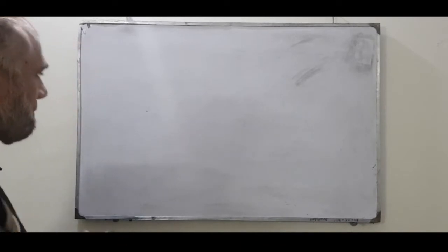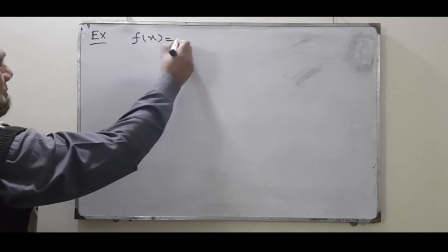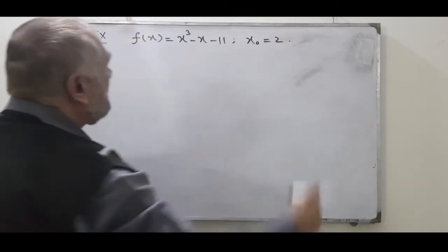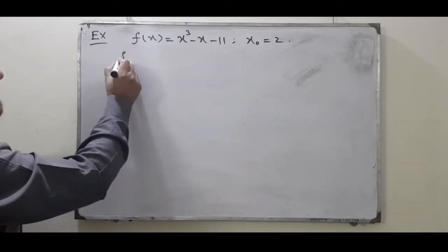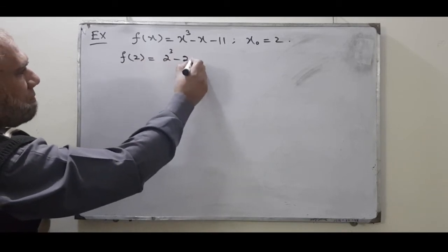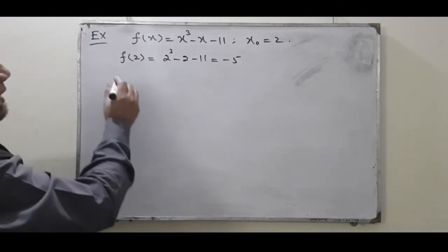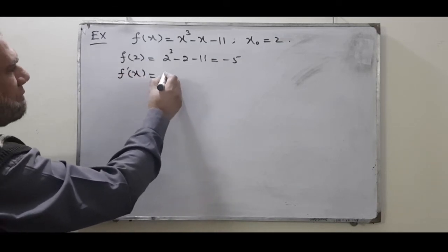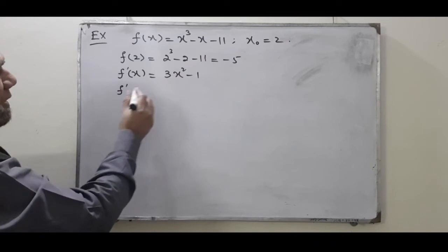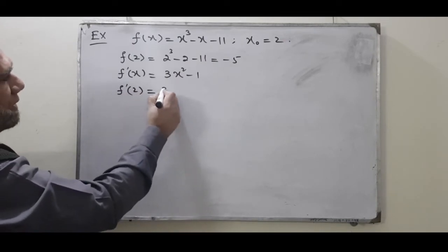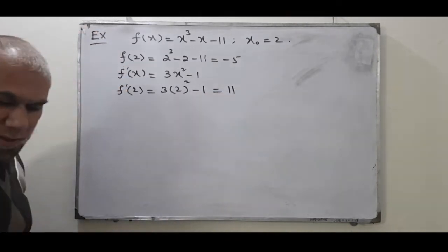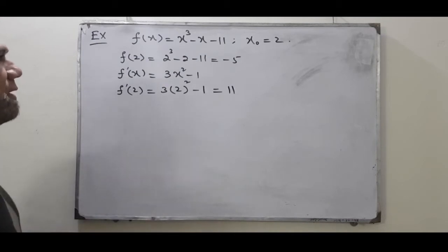Now we apply it on a question. The function is f(x) = x³ - x - 11. To proceed, we require the function's value at x₀ = 2, which equals 2³ - 2 - 11 = -5. We also require the derivative: f′(x) = 3x² - 1. The value of the derivative at the initial point is f′(2) = 3(2²) - 1 = 11.